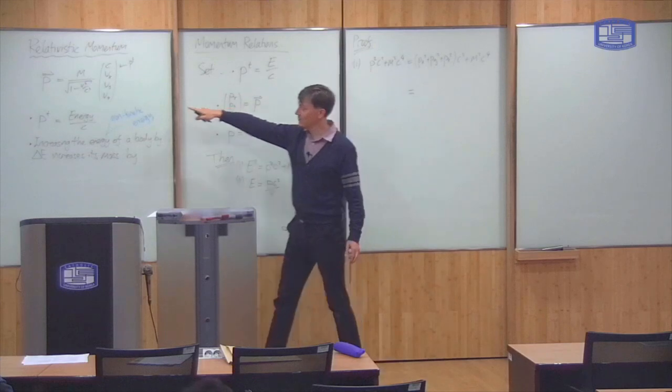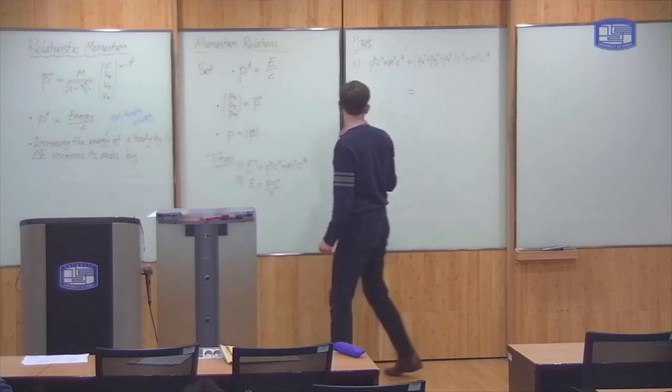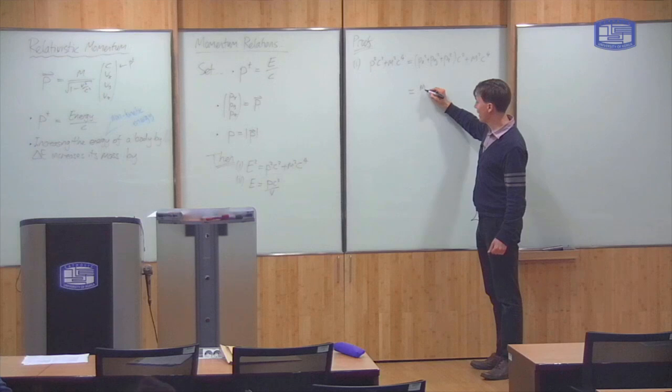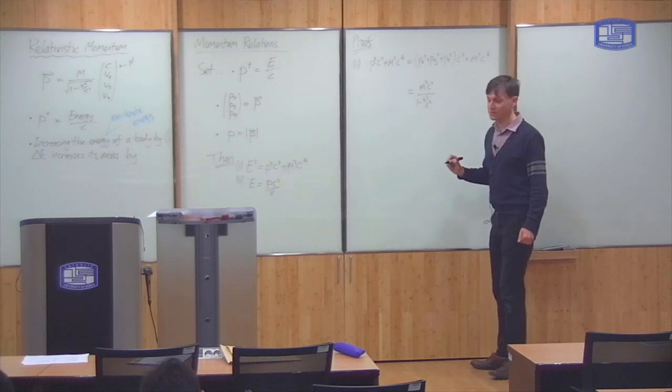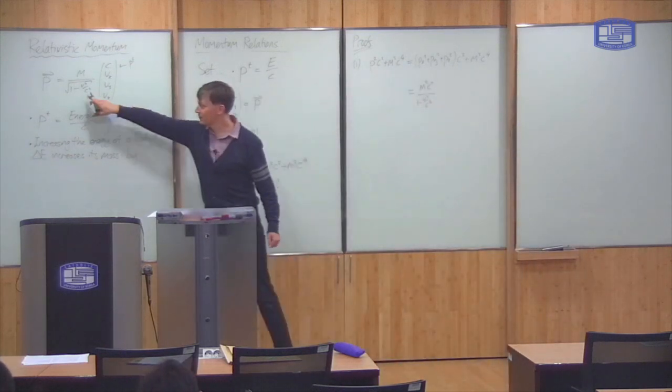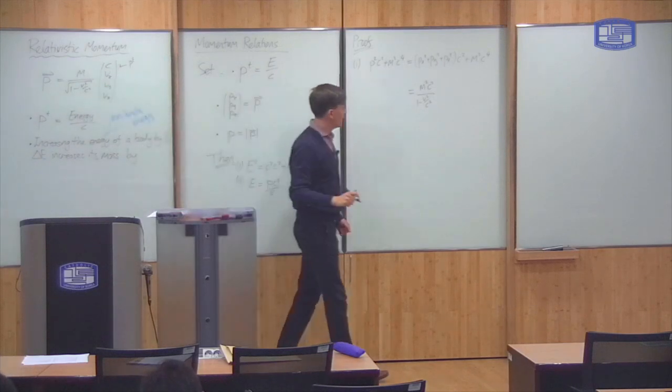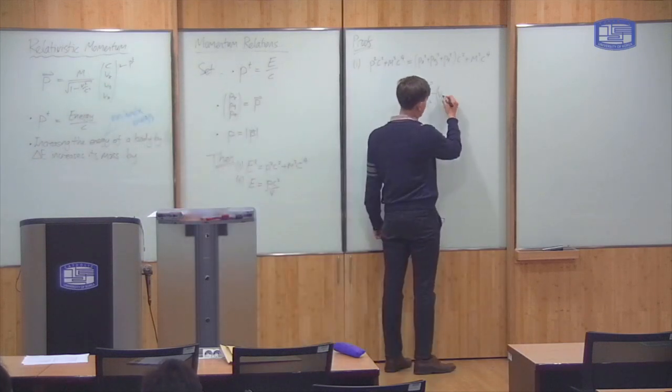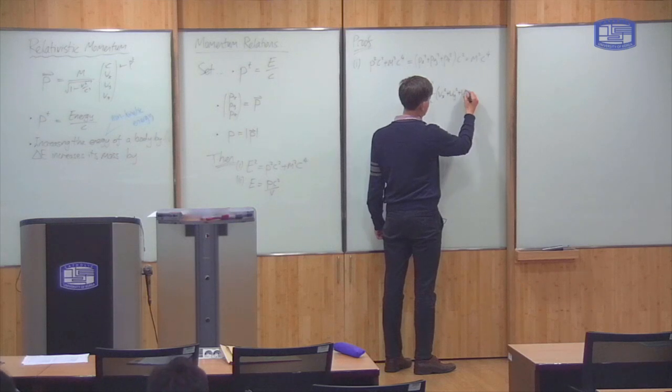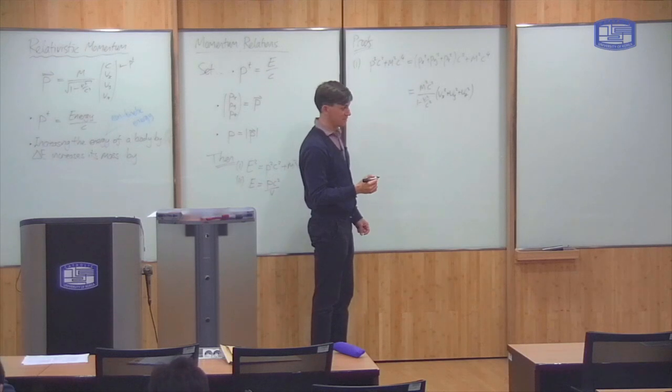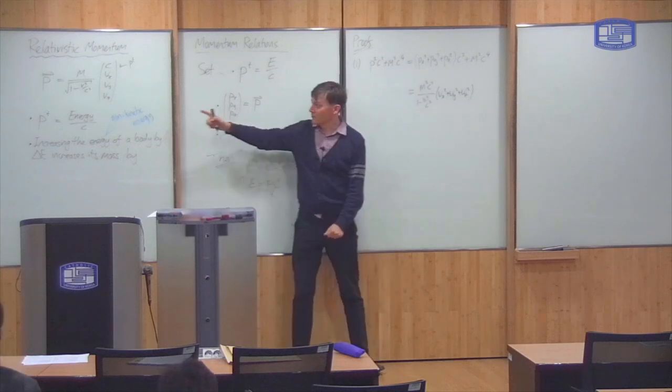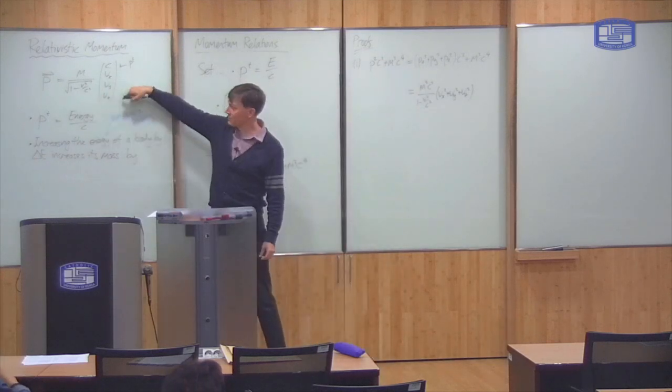And now we use the definition here. So for example, I can take out the common factor of m squared c squared over 1 minus v squared over c squared. So this factor comes from here, this squared. And then inside you've just got vx squared plus vy squared plus vz squared. Is that clear what I've done here? I've just substituted px, py, pz, the formulas here.